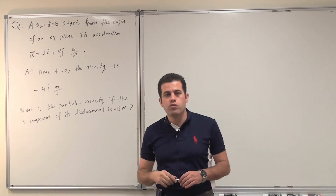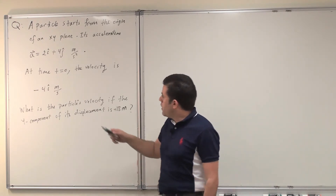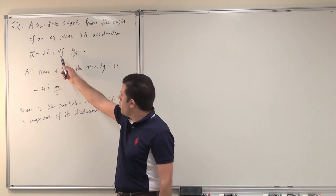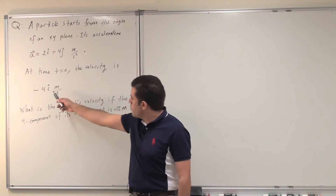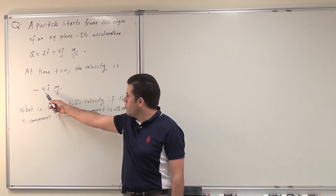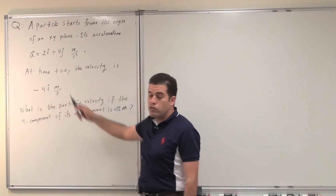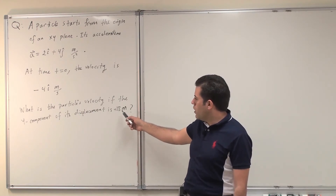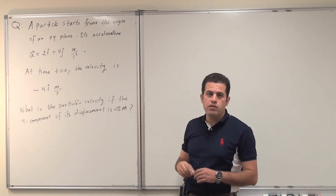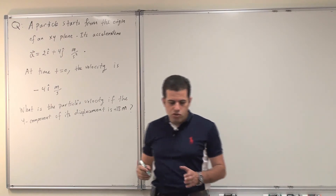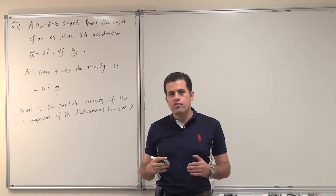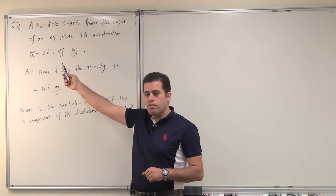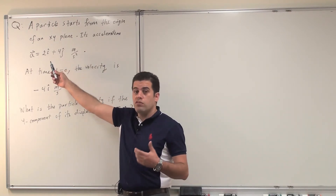This is a typical question on motion in two dimensions, where I have an acceleration vector with two components, ax and ay, and an initial velocity vector with two components also. The i-component is minus 4 and the j-component is 0. I also have a displacement vector, but only the y-component of the displacement is given.